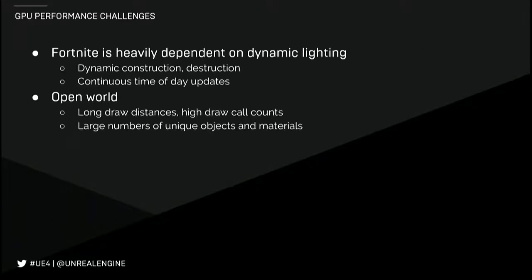Talking a little bit about GPU optimization: Fortnite is heavily dependent on dynamic lighting. You can destroy just about any object in the world, you can also build new structures, and we have continuous time of day. That means we can pre-compute almost nothing. It's also open world in the sense that we have very long draw distances — you can see large points of interest, trees, and so on from pretty much the other side of the map. This also means we have a large number of unique objects and materials. I'm going to talk about dynamic resolution and temporal upsampling since this was one of the key features that allowed us to ship the GPU at frame rate without reducing visual quality too much.